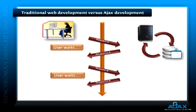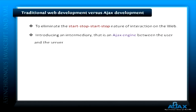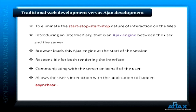Let's see how we overcome this using Ajax. Ajax came up mainly to eliminate the start-stop-start-stop nature of interaction on the web, by introducing an intermediary — an Ajax engine — between the user and the server. The browser loads this Ajax engine at the start of the session, and this engine is responsible for both rendering the interface the user sees and communicating with the server on behalf of the user. The Ajax engine allows the user's interaction with the application to happen asynchronously, independent of communication with the server.